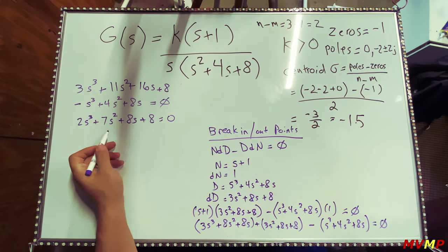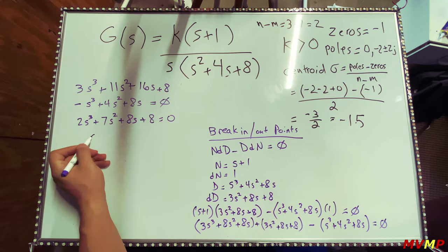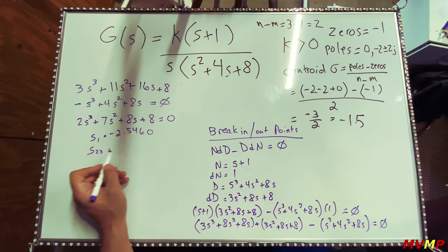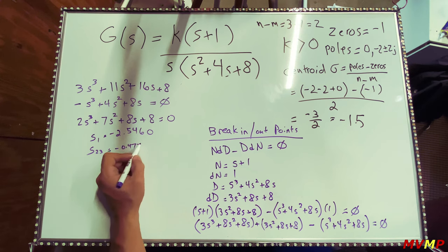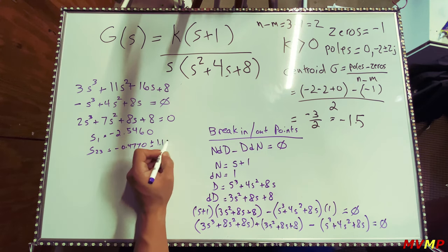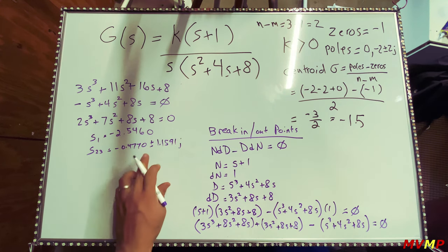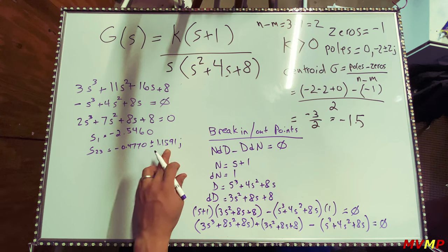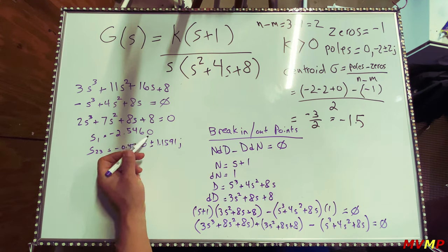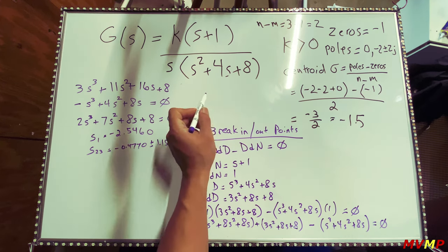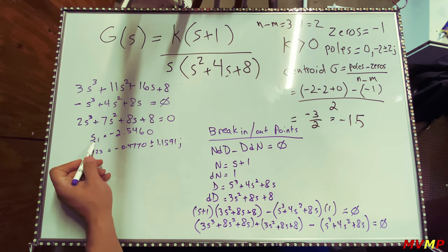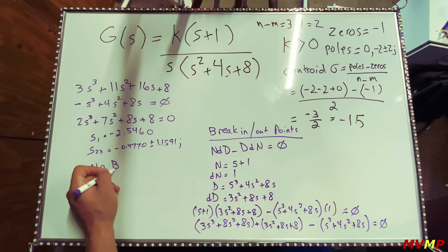Factoring this out gives roots of negative 2.5460, and two complex conjugate roots of negative 0.4770 plus/minus 1.591j. The complex conjugates cannot be break-in/breakout points because they're not on the real axis. The real root at negative 2.54 is not on the root locus — our root locus goes from zero to negative one — so we have no break-in/breakout points.